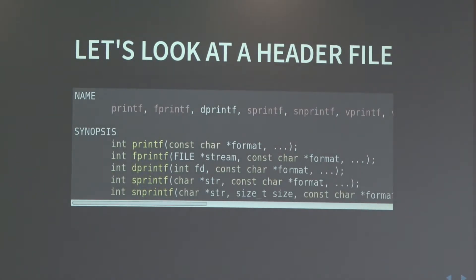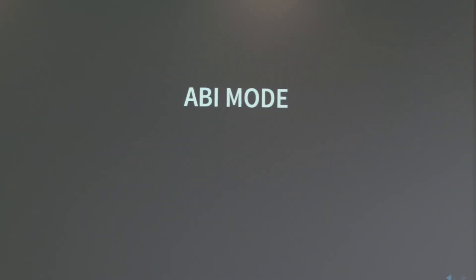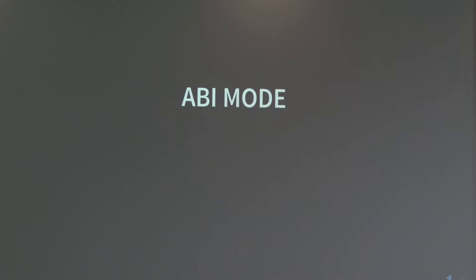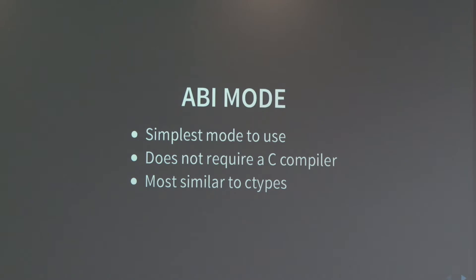Let's say we have a header file — I took a very simple example, it's printf. This is the definition of printf, the first one after the synopsis. How do we call printf from CFFI? Let's look at it using the ABI mode. It's the simplest mode to use because it doesn't require a C compiler. It's more similar to ctypes — you declare a bunch of functions and types at runtime, and then you can directly interact with those.